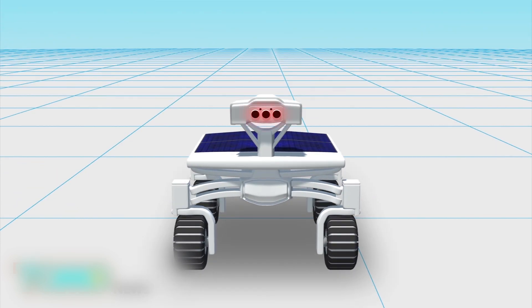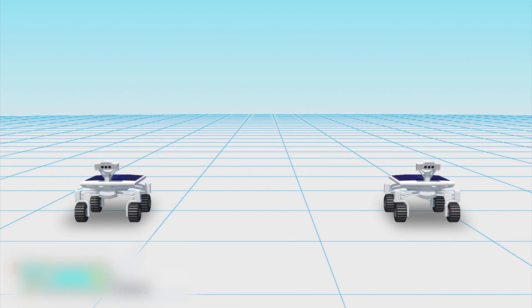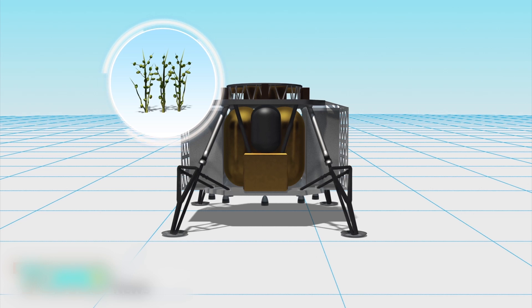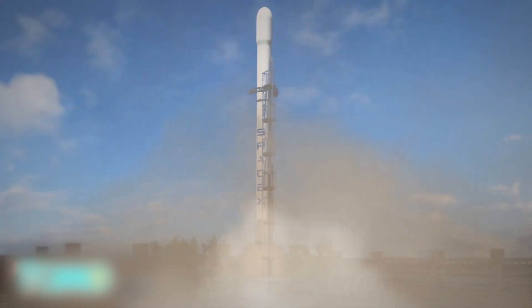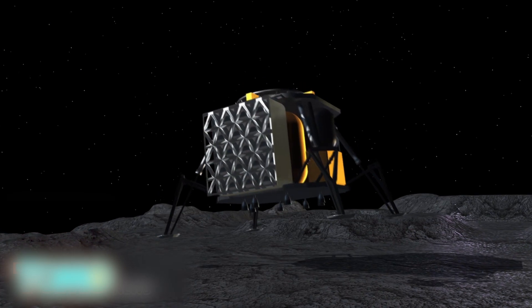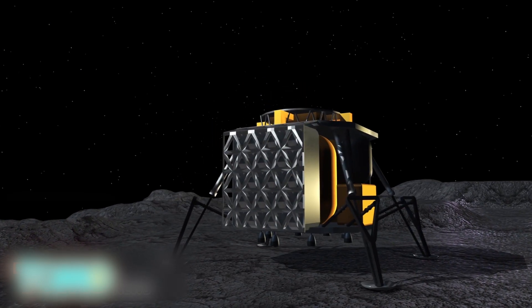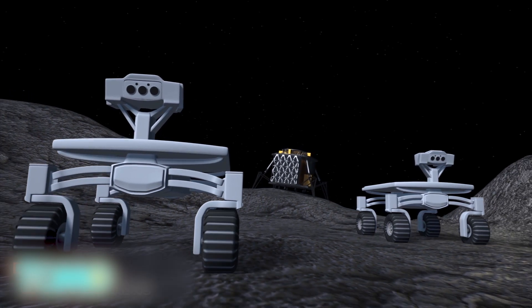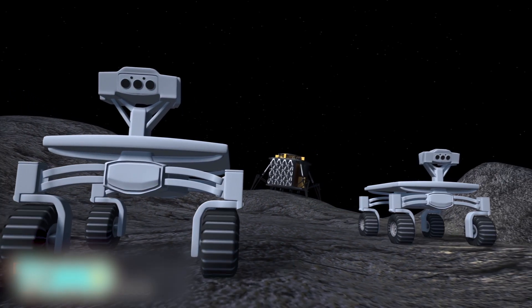Two rovers will be carried by the ALINA spacecraft, which stands for the Autonomous Landing and Navigation Module. ALINA will also carry several other payloads, including a Lunar Plant Growth Experiment. A SpaceX Falcon 9 rocket will likely be used to transport the rovers into space. ALINA will touch down about 5 kilometers from the Apollo 17 in the Taurus-Littrow Valley. After landing, the two rovers will be deployed and travel toward the Apollo 17 lunar rover.